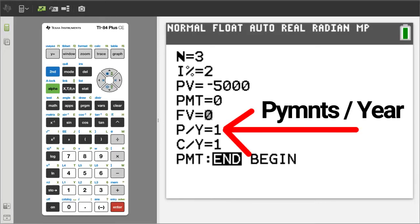P/Y is automatically set to 1. P/Y is payment per year. Our interest will be paid to us one time each year. So leave P/Y to 1.